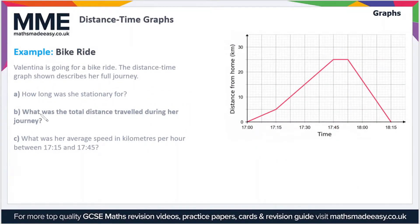Moving on to part B then, what was the total distance traveled during her journey? Well, you might initially think that the total distance traveled is just the maximum distance away from home, but the thing is, if she's traveled this distance away from home to the maximum distance here, that's 25 kilometers, she's then got to travel back.